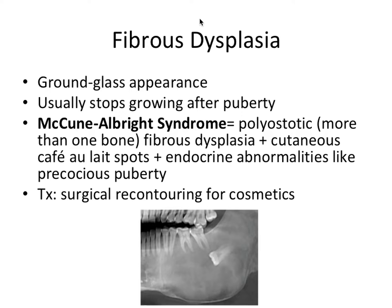Next we have fibrous dysplasia, and the most important term to remember for this one is the ground glass appearance. One way I remember it is the word 'fiberglass' — it reminds me of fibrous dysplasia and this ground glass appearance, linking 'fibrous' and 'glass' together. It usually stops growing after puberty, but before then it can be very expansile and cause facial distortions, as you can see in this image. The ground glass appearance is this very soft, radiopaque appearance throughout the entire lesion.